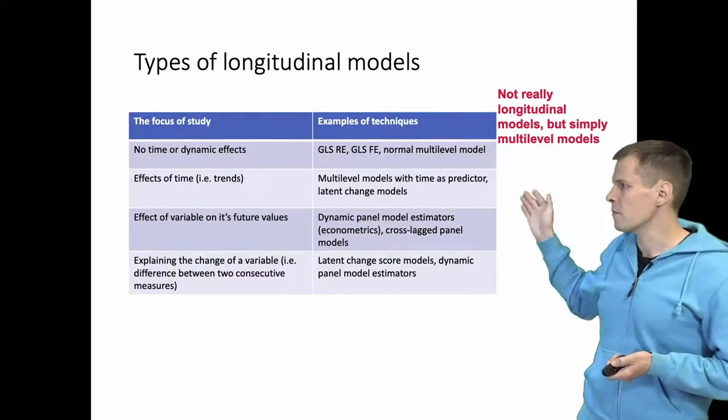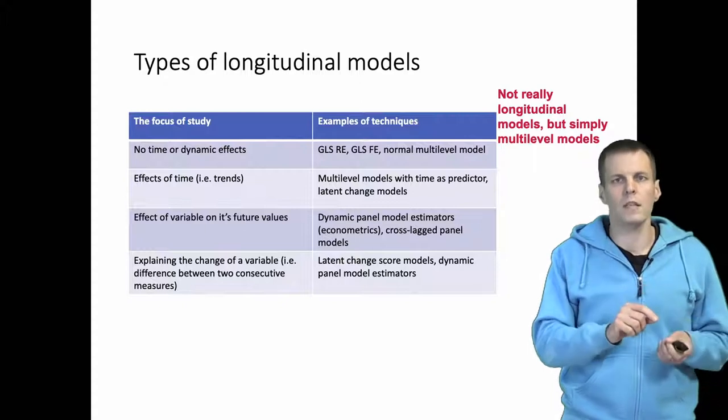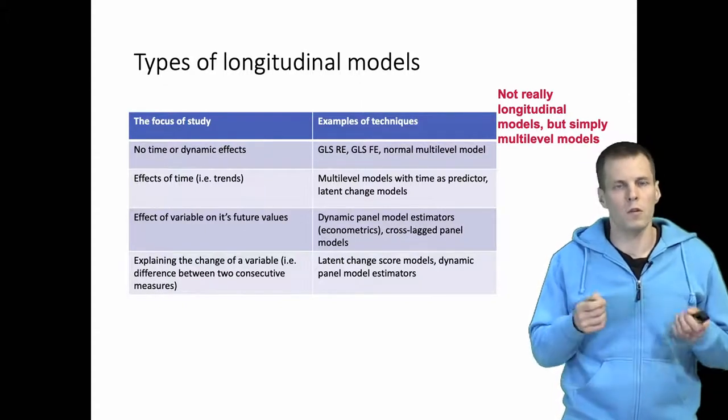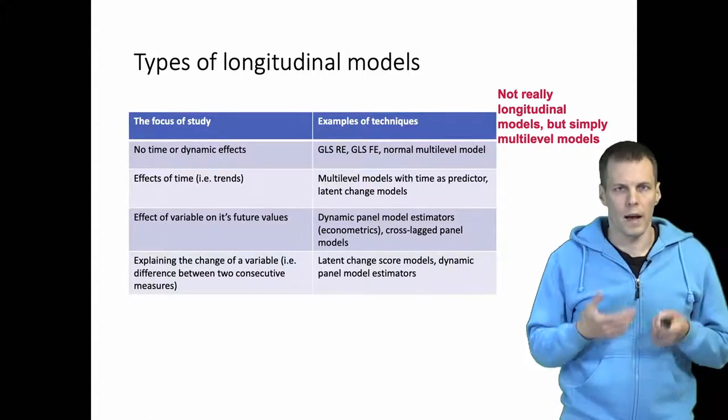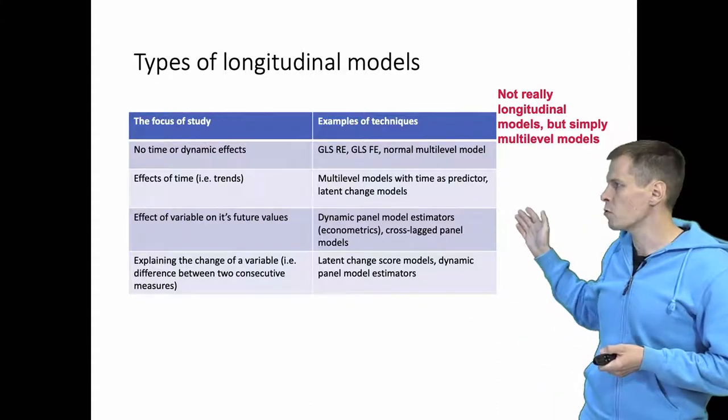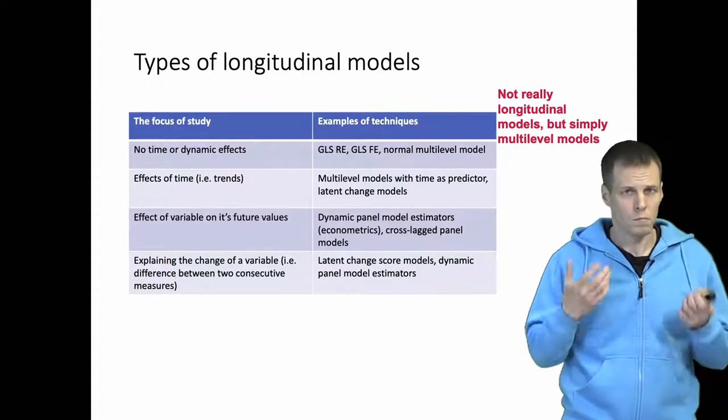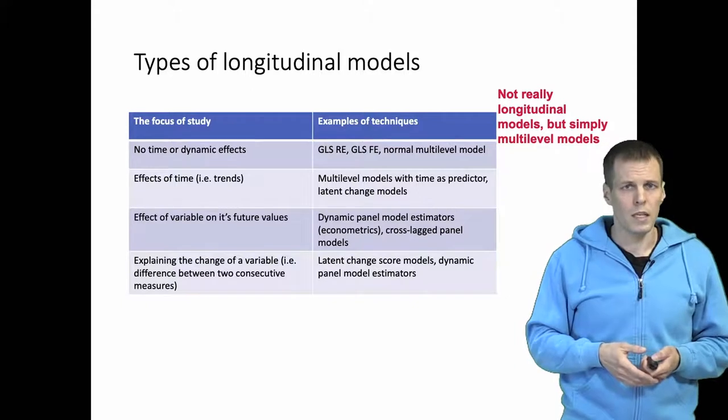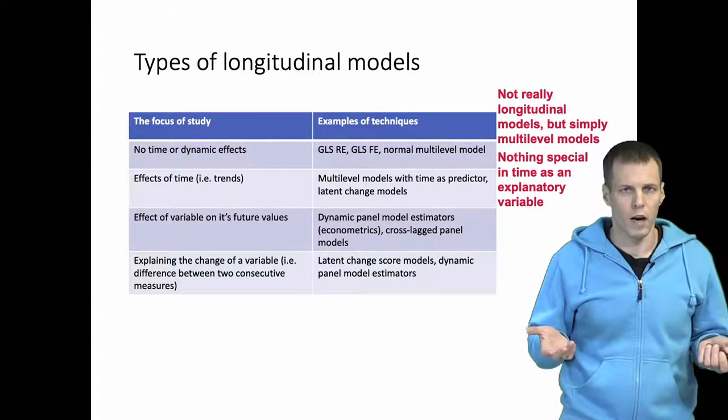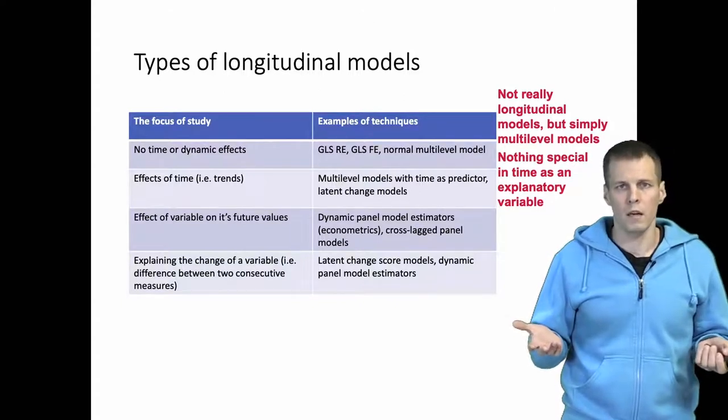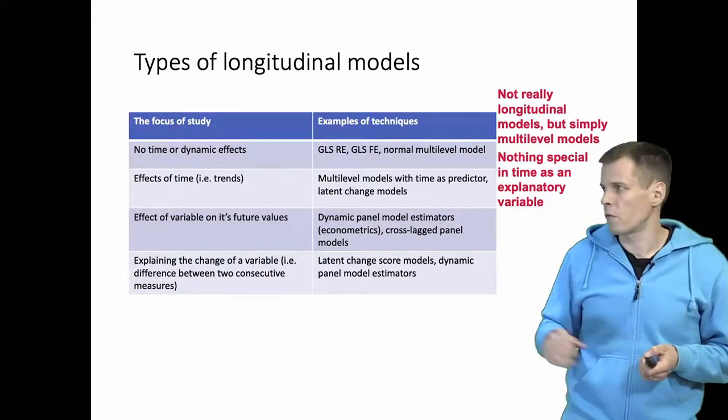So the first class is effects of time or trends, and we want to analyze how something decreases or increases or first goes up and then goes down over time, and what explains why certain cases have different time trends. Here we would use multi-level models with time as a predictor, or perhaps latent change models or some other kinds of models. But these models are actually pretty simple because there is nothing special in time as an explanatory variable. Time is just a variable like any other; just the fact that it happens to be one of our ID variables does not really make a difference for this kind of models.